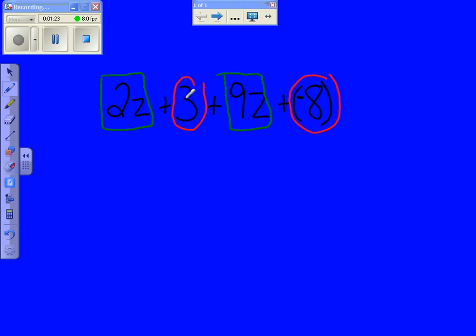Now since I changed everything to addition, this is what makes it easier. Addition is commutative, which means I can put them in any order. 1 plus 2 is the same as 2 plus 1. So I can go ahead and rewrite this with my like terms right next to each other: 9z plus 2z plus 3 plus negative 8.